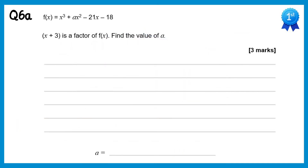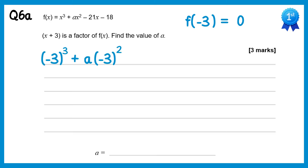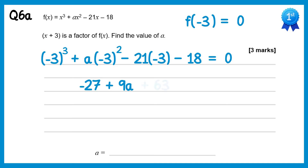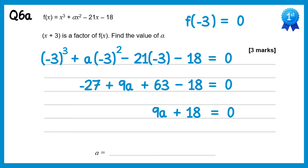In this question we're told that x plus 3 is a factor. This means that if we do f of negative 3 we know we get 0. So let's substitute that in: negative 3 cubed plus a lots of negative 3 squared, take away 21 lots of negative 3, take 18. We know this must equal 0, so if we simplify the left hand side: negative 3 cubed is negative 27, negative 3 squared is positive 9, times a gives plus 9a, negative 21 times negative 3 is plus 63, then take 18 equals 0. Collecting up constant terms we get 9a plus 18 equals 0. Rearranging, 9a equals negative 18, divide both sides by 9, we get a equals negative 2.